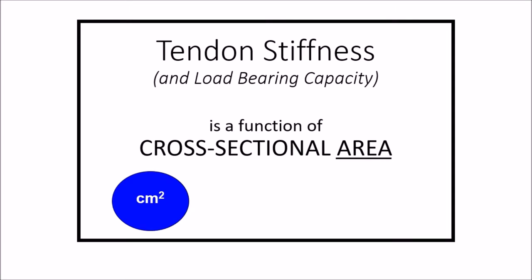A big picture concept that we talked about in class, but that I wanted to review: tendon stiffness, and therefore the load-bearing capacity, is a function of the tendon's cross-sectional area — how big it is from side to side. You can think of this like the width of an oak tree trunk. So the thicker the tendon, the more tension or force it's going to be able to withstand before it snaps or ruptures. Likewise, the stiffer the tendon, the more stress it will take before it undergoes a change in length.